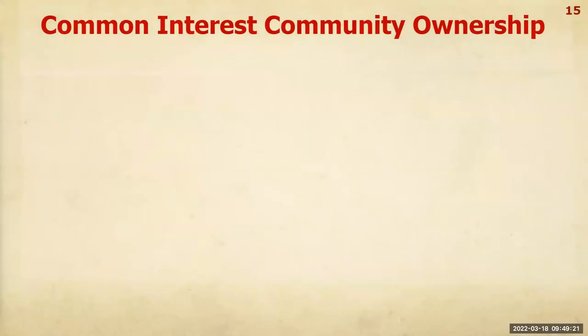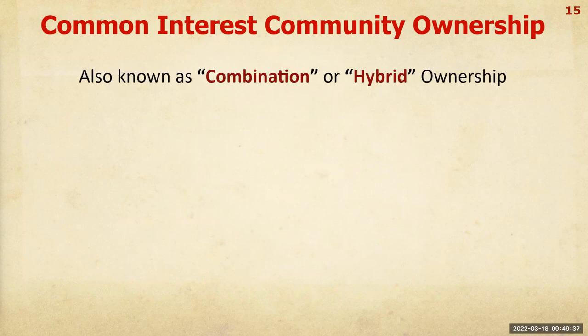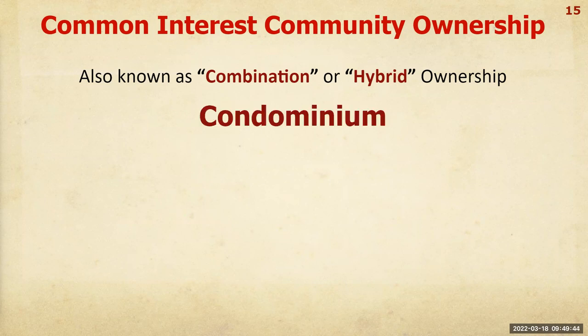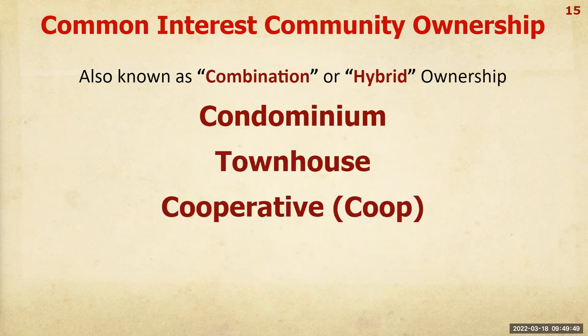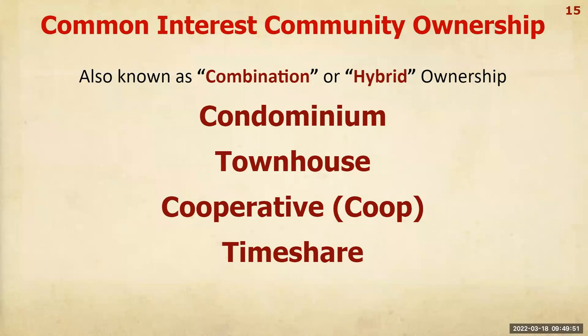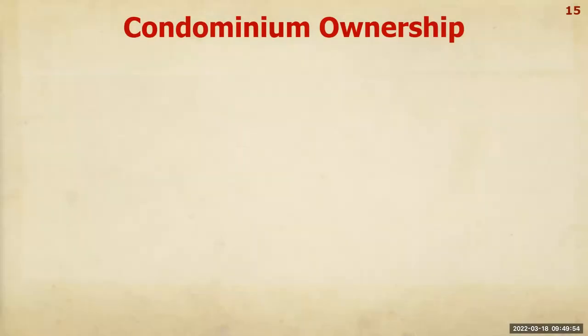The next topic is common interest community ownership, also referred to as combination or hybrid ownerships. This includes condominium, townhouse, cooperative, and timeshare. We'll start with condominium.